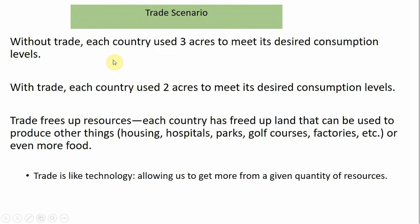To sum up: without trade, each country used three acres to meet its desired consumption level. With trade, each country is now only using two acres of land. Trade frees up resources — each country has freed up an acre of land that can now be used to produce other things: housing, hospitals, parks, amusement parks, golf courses, factories, retail outlets, and so on. Or they can use this freed-up land to produce even more food. In that sense, trade is like technology — it allows us to get more from a given quantity of resources.